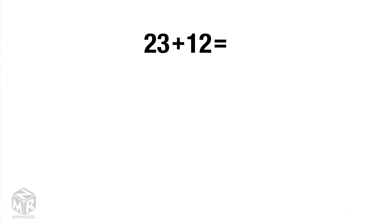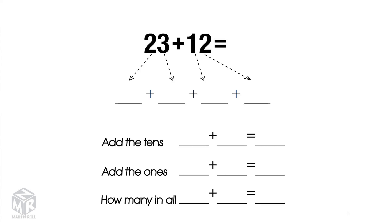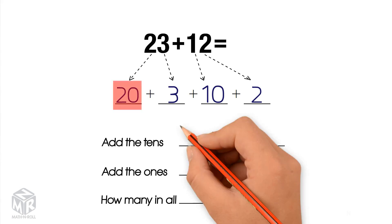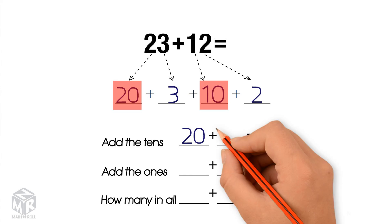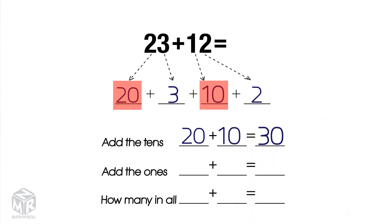Let's try another example: 23 plus 12. We break apart 23 into 20 and 3. Next, we break apart 12 into 10 and 2. First, we add the tens: 20 plus 10 equals 30.